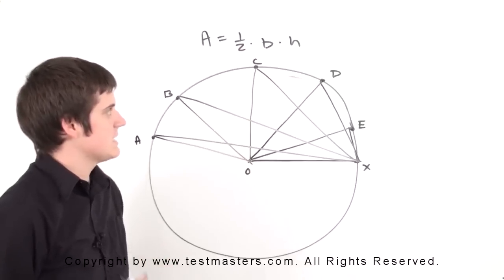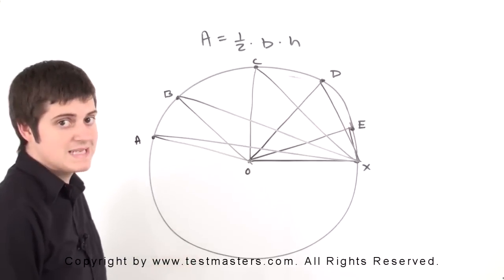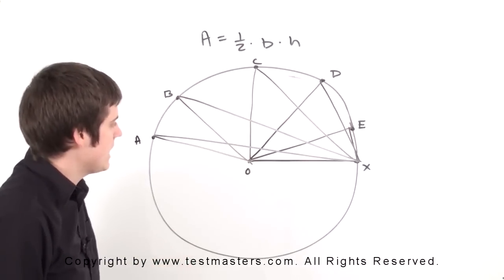It wants us to find the triangle that has the smallest area. Again, always go back to your formula of one-half base times height.